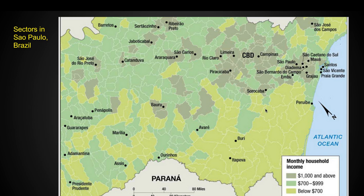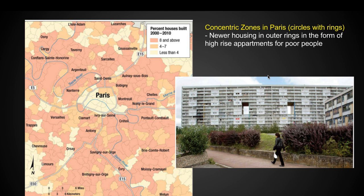Looking at sectors in São Paulo, Brazil — there's really no concentric zone, no circles, just a lot of sectors. The most expensive housing and highest household incomes are peppered around the CBD. Just like in Europe, people who make the most money live downtown in the central business district. Looking at a concentric zone of housing in Paris — homes built from 2000 to 2010 — newer housing is going to be in the outer rings in the form of high-rise apartments for poor people, because in European cities rich people live downtown and you don't see new houses being built there.